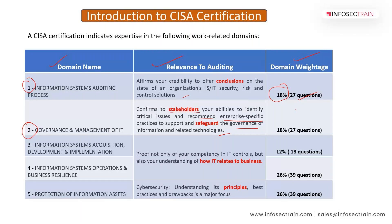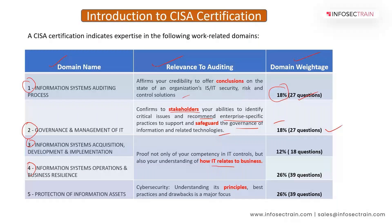Domain two has a weightage of 18%, approximately 27 questions. The third and fourth domains are not only proof of your competency in IT controls, but also demonstrate how you understand that IT relates to business. This is very important — IT is always related to business, and throughout all CISA course domains, this theme comes up repeatedly.